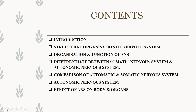Let's quickly look into the contents. The contents comprise: introduction, structural organization of the nervous system, organization and function of ANS, differentiation between somatic and autonomic nervous system, a comparison based on a picture of autonomic and somatic nervous system, somatic nervous system, autonomic nervous system as a whole, and effects of ANS on the body and other organs.